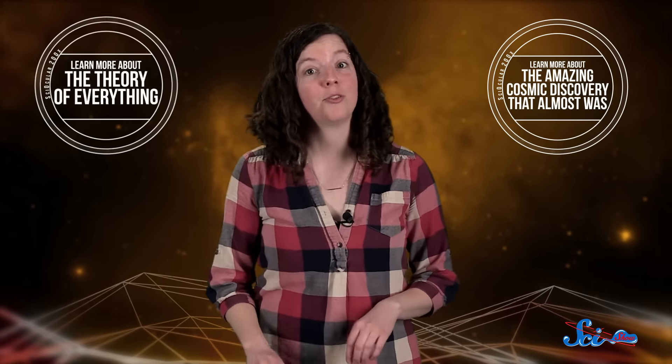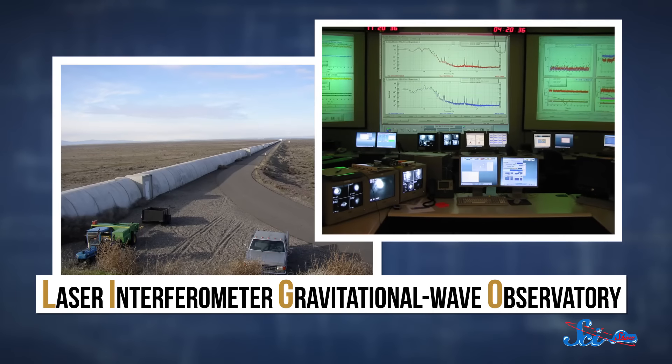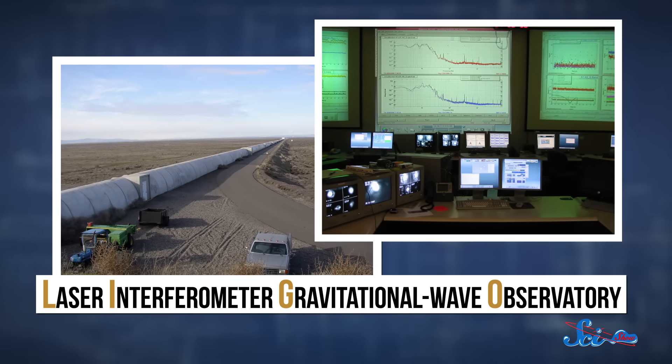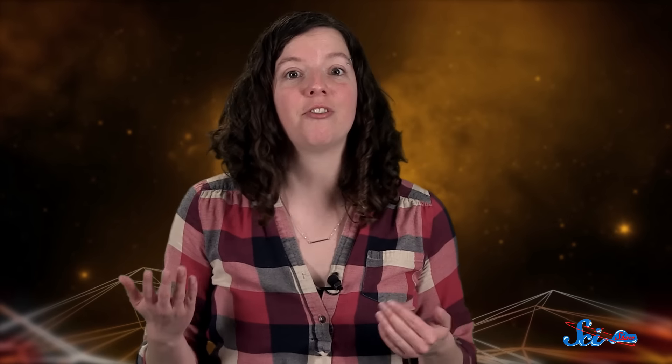The signal was detected on September 14, 2015, by the LIGO observatories in both Washington state and Louisiana. The observatories are set up to detect ripples in spacetime based on the positions of mirrors, with beams of laser-generated light bouncing off of them to measure their distance. And in September, the mirrors appeared to move a tiny bit.